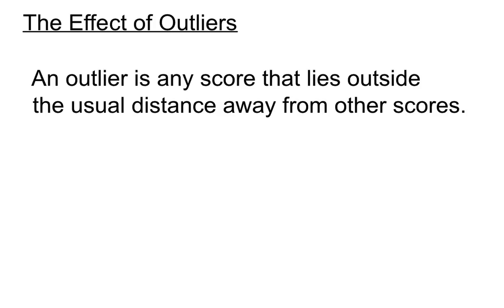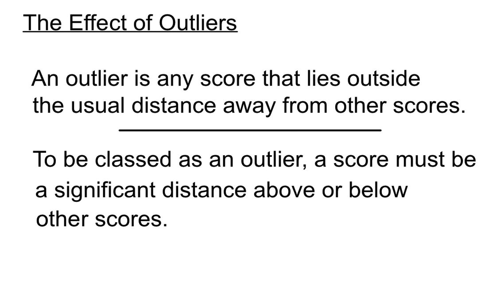Let's define an outlier. An outlier is any score that lies outside the usual distance away from the other scores. To be classed as an outlier, a score must be a significant distance above or below the other scores.